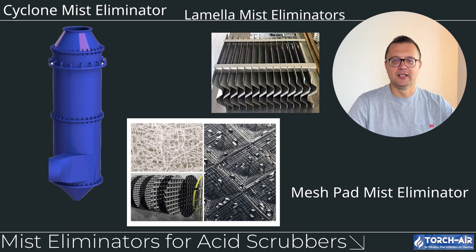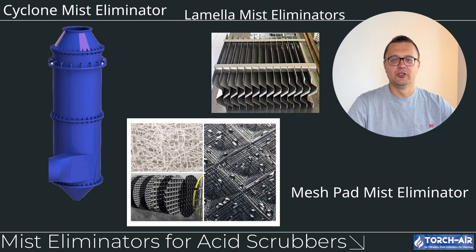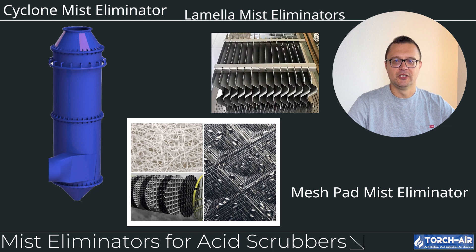Mist eliminators for acid scrubbers. After the acid gases have been neutralized, it's essential to ensure that no liquid droplets are carried out with the clean gas. This is where mist eliminators come in — they capture any remaining droplets before the gas exits the system. For example, high-efficiency mist eliminator options include: cyclone mist eliminators, which remove larger droplets through centrifugal force; lamella mist eliminators, which use parallel plates to catch smaller droplets, increasing efficiency; and mesh pad mist eliminators, which are excellent for capturing fine droplets by providing a large surface area for coalescence.